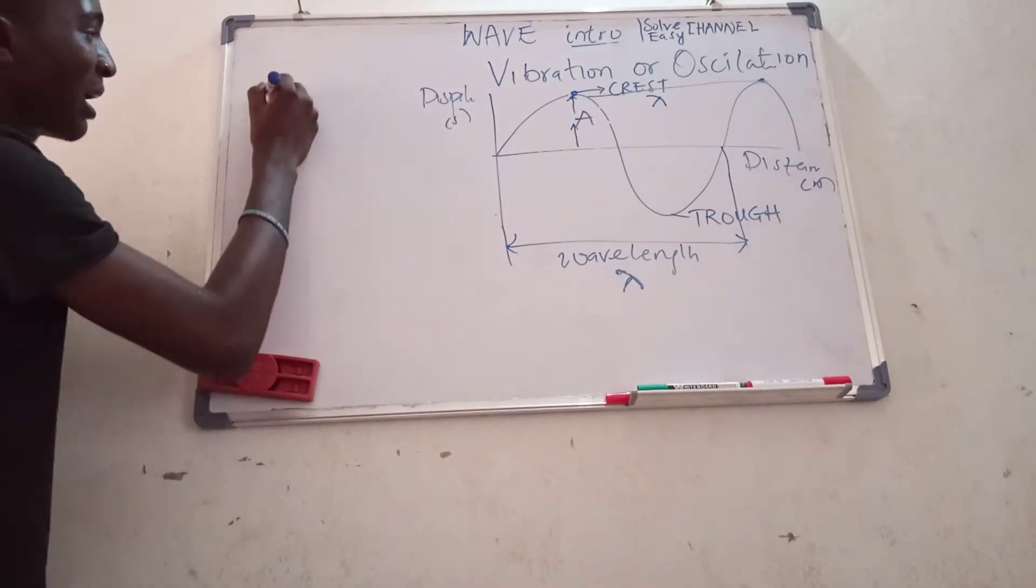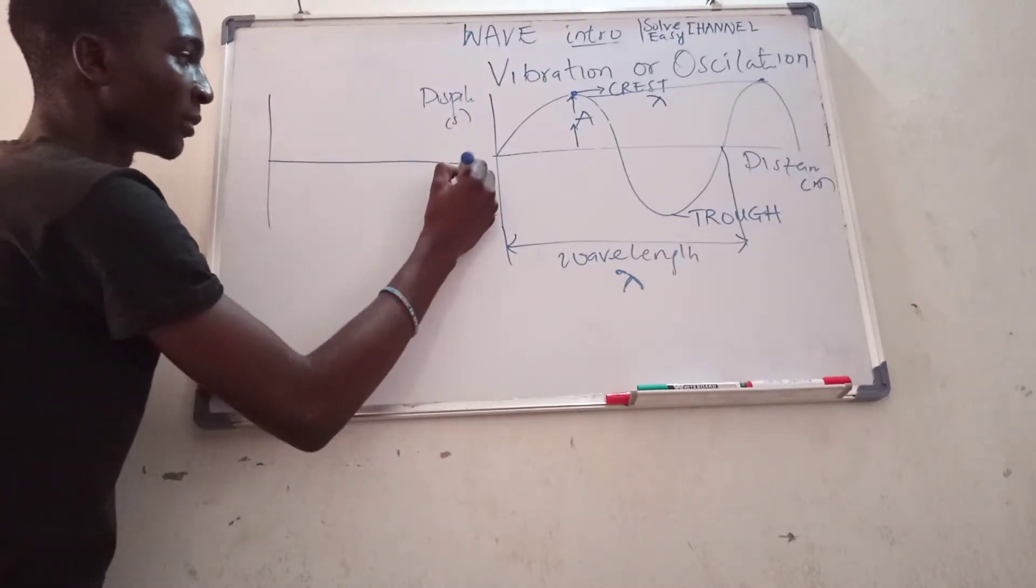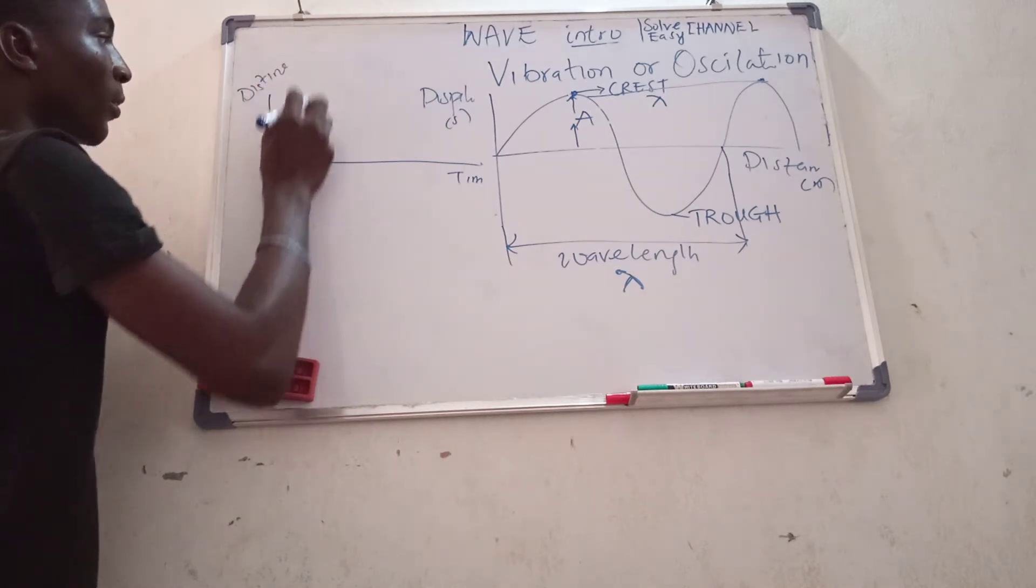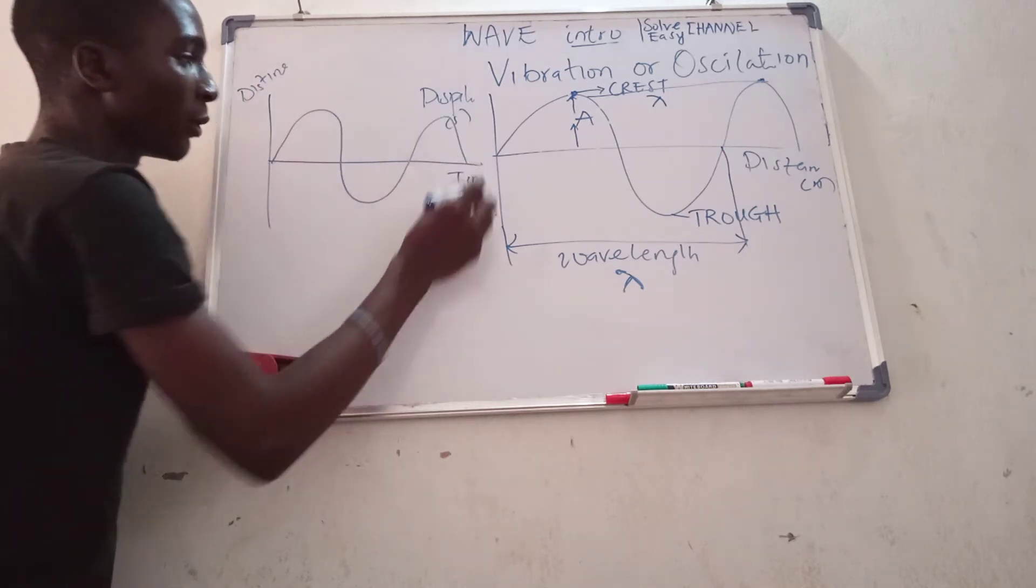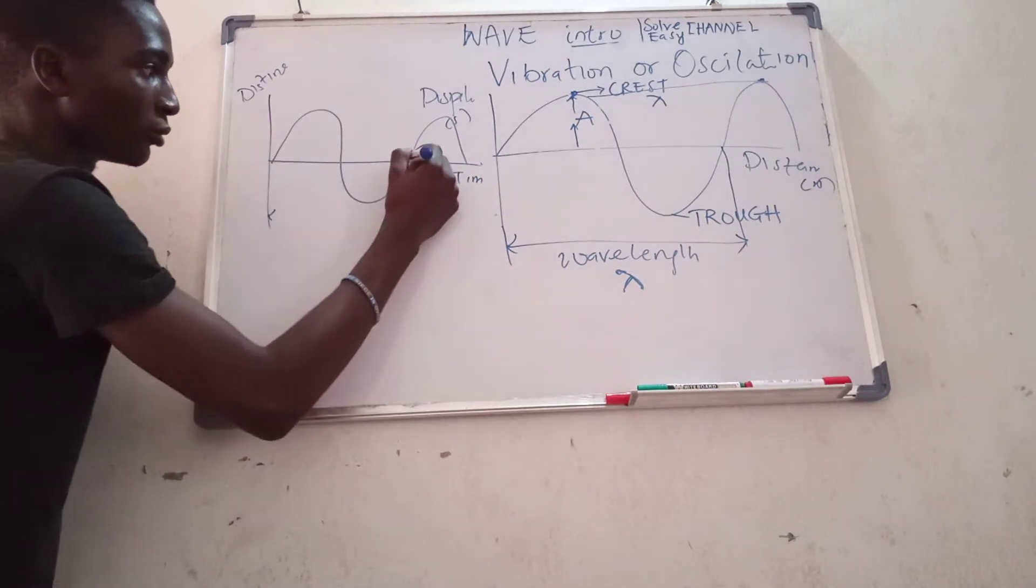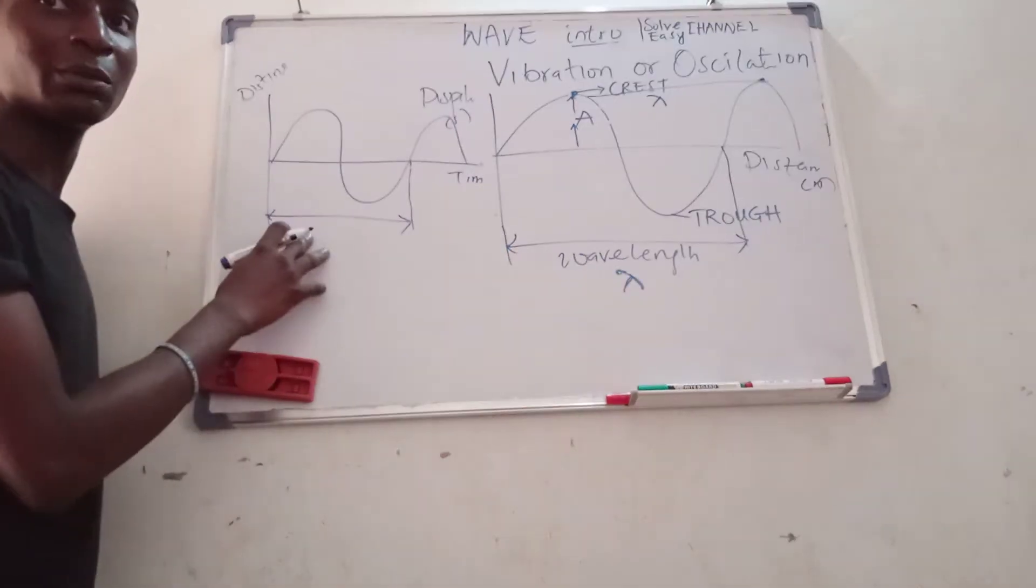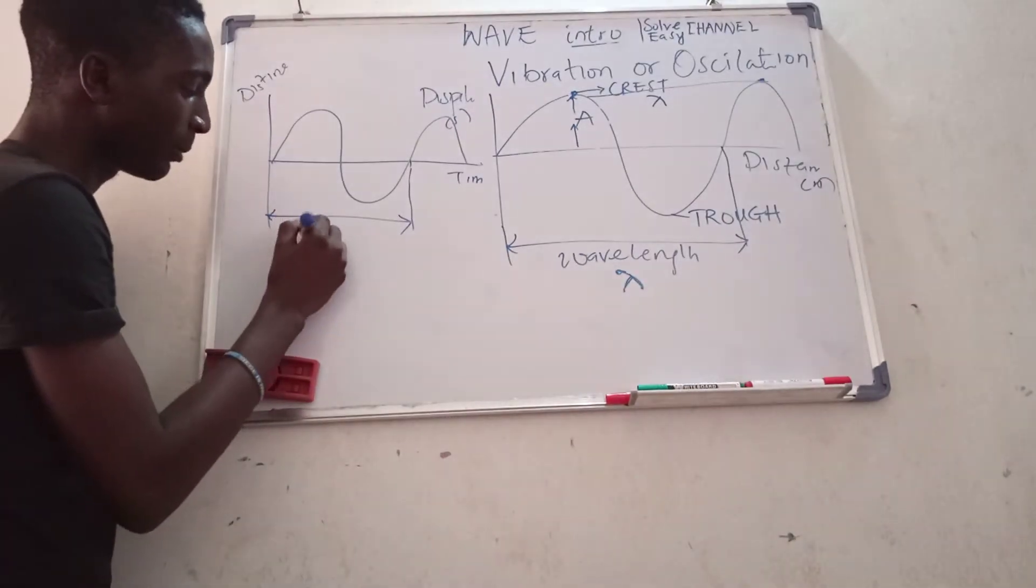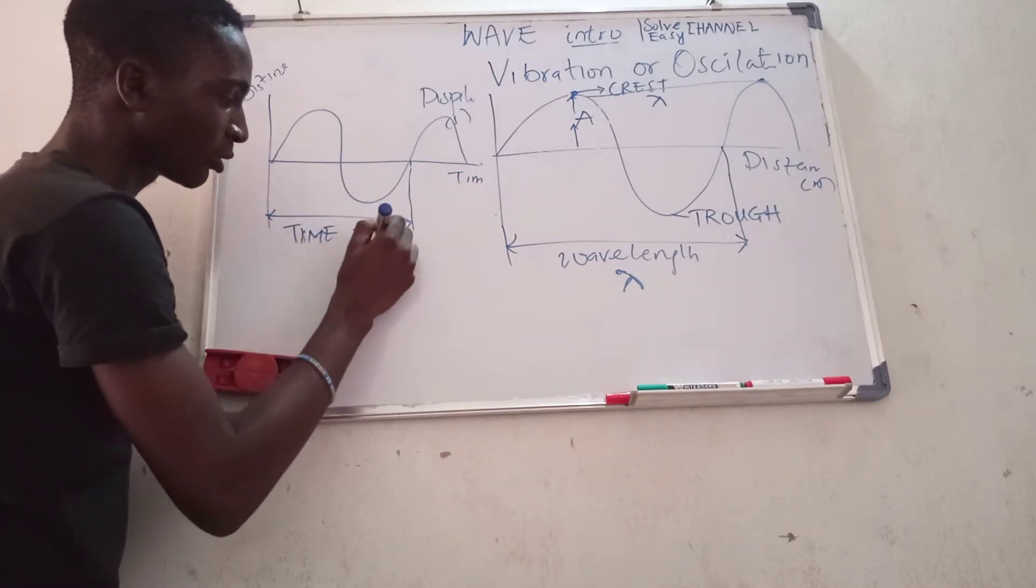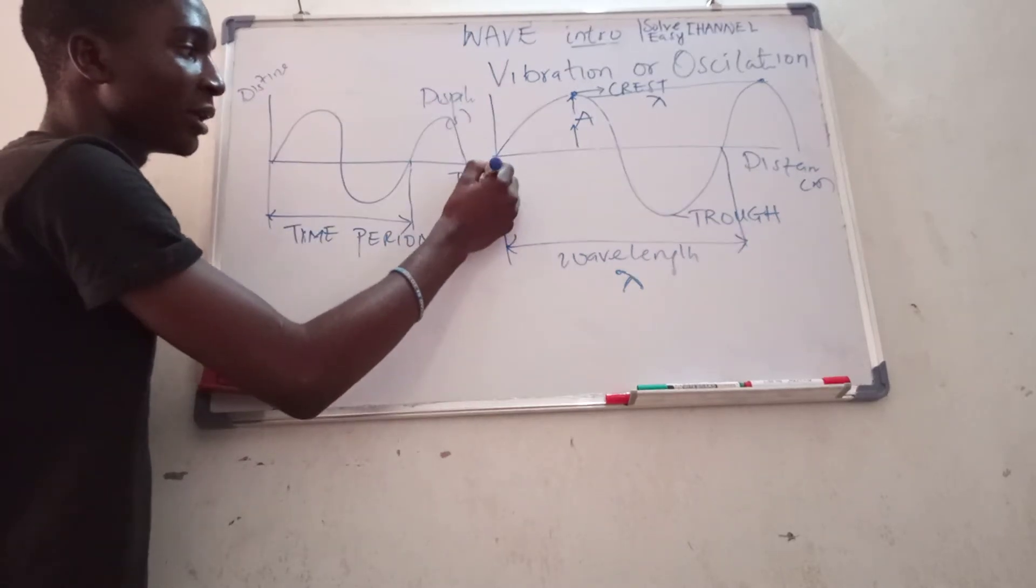If I'm having a displacement-time graph of a wave, from this point to this point for a complete oscillation, this won't be my wavelength anymore. This would be my period, or time period, because it's a displacement-time graph.